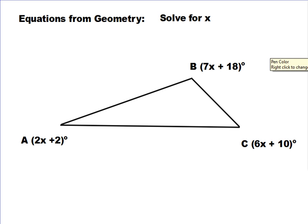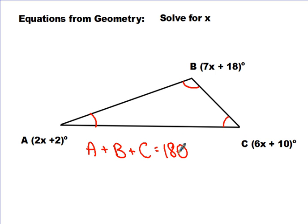The next thing we're going to talk about is equations from geometry. We're going to use our knowledge of geometry to solve these equations. In the first one, we're solving for x. Keep in mind that each letter represents a different angle, and we're solving for x, not the angles themselves. What do we know about triangles? All three angles in a triangle should equal 180 degrees. So angle A plus angle B plus angle C equals 180 degrees. We can substitute: A is 2x + 2, B is 7x + 18, and C is 6x + 10, and it should equal 180.